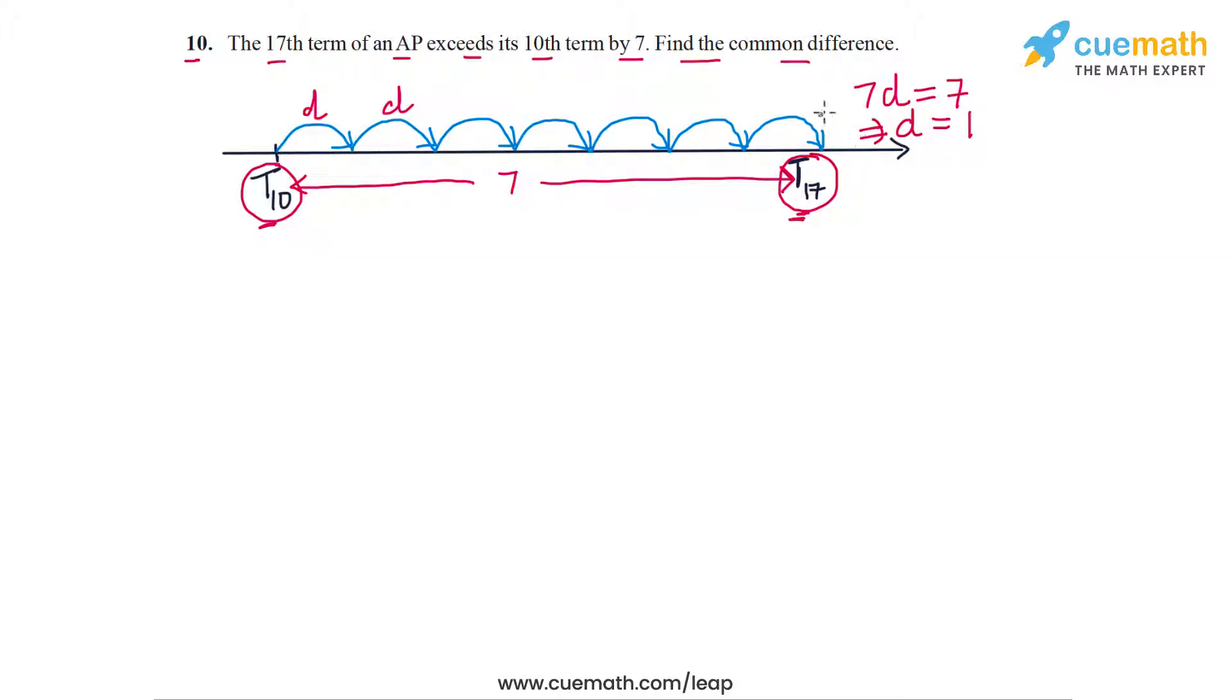But if this question comes on a test or an exam, the way to write the solution would be as follows. You will assume that the first term of the AP is a, and you will assume that the common difference is d. Then you will write expressions for t10 and t17. So t10 will be a plus n minus 1 times d. N in this case is 10, so this will be a plus 9d.